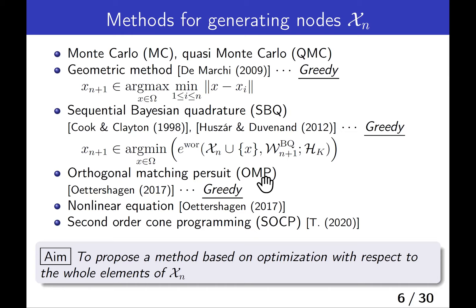Another greedy method called orthogonal matching pursuit is proposed by Oates and Hagen. There are also some non-greedy methods: a method based on nonlinear equations, and a method based on second-order cone programming proposed by myself. The aim of this study is to propose a method based on optimization with respect to the whole set of nodes.